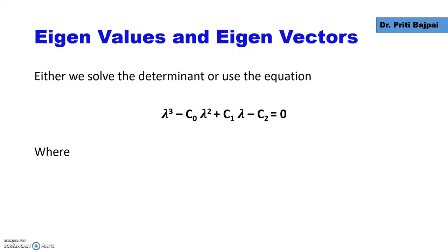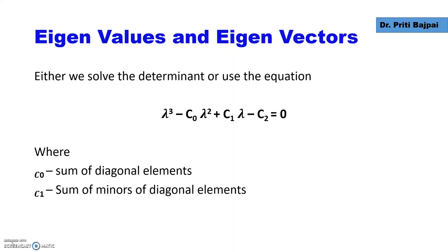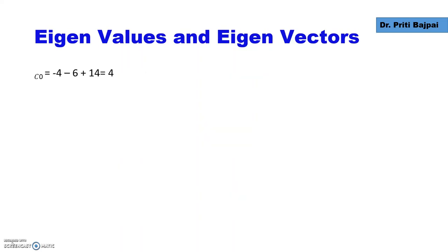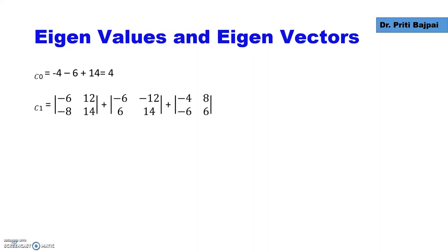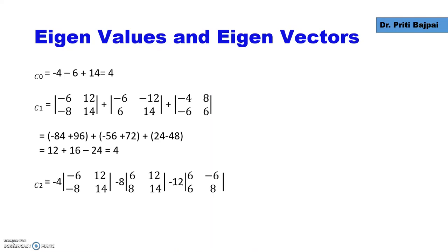What are C0, C1, and C2? C0 is found by adding all the diagonal elements. C1 is the sum of minors of the diagonal elements, and C2 is the value of the determinant of matrix A. Adding the values, C0 comes out to be 4, C1 which is the sum of minors comes out to be 4, and C2 which is the determinant equals 0.